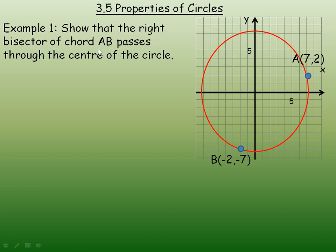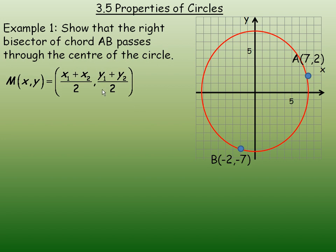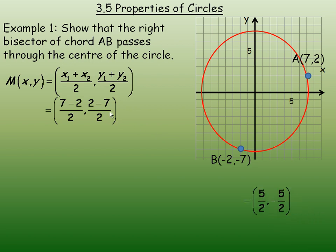The middle means the midpoint. The first thing we will do is find the midpoint of AB using the midpoint formula. We add 7 and negative 2 and divide by 2, and also 2 and negative 7 and divide by 2. The midpoint is the point (5/2, -5/2).